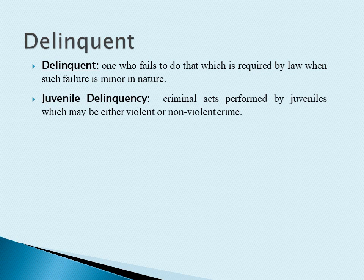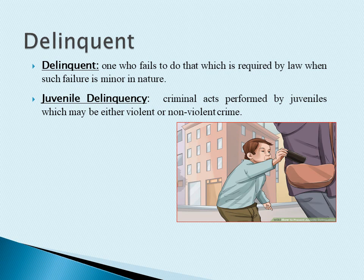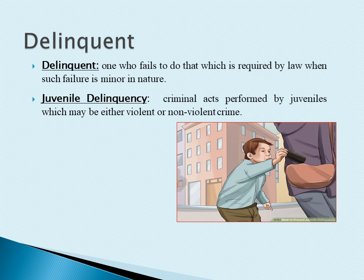Juvenile delinquency refers to criminal acts performed by juveniles. The act may be either violent or non-violent crime, like stealing wallets or mobile phones, but it should be committed by persons who are usually under the age of 18 and are still considered to be a minor. Most legal systems prescribe specific procedures for dealing with juveniles, such as juvenile detention centers. There is much debate about whether or not such a child should be held criminally responsible for his or her own actions.